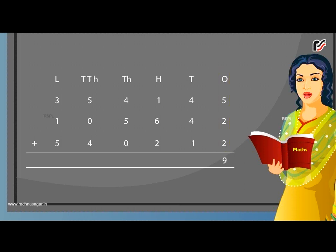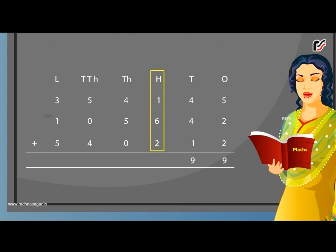Next, add the tens: 4 plus 4 plus 1 is equal to 9 tens. Write 9 under the tens column. Next, add the hundreds: 1 plus 6 plus 2 is equal to 9 hundreds. Write 9 under the hundreds column. Next, add the thousands: 5 plus 4 plus 0 is equal to 9 thousands. Write 9 under the thousands column.